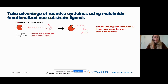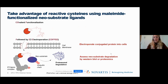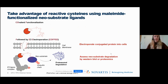We take purified E3 ligase and label it directly with a neo-substrate ligand using a maleimide-functionalized probe—JQ1, the BRD4 ligand, is shown as an example—and monitor that labeling event by intact mass spec. We then electroporrate cells to temporarily permeabilize the membrane so they take up the neo-substrate-functionalized E3. It can then associate with remaining E3 complex components, leading to ubiquitination and degradation of the neo-substrate, read out by western blot or proteomics.